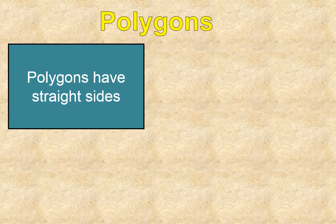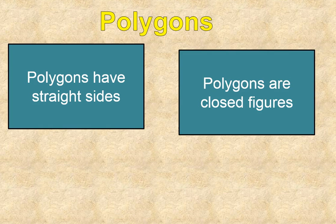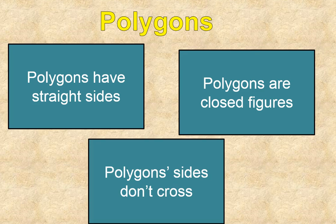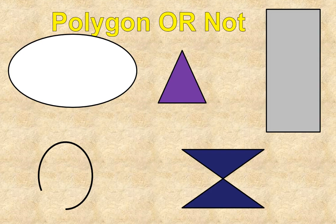Let's get started. A polygon is a shape that has straight sides or straight edges. Polygons are closed figures — they have no open edges, and polygon sides don't cross. It might be tough to picture what this means, so we're going to play a little game called 'polygon or not' to help us recognize the properties of a polygon.